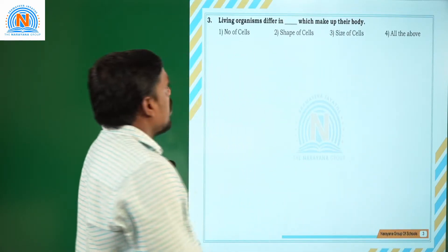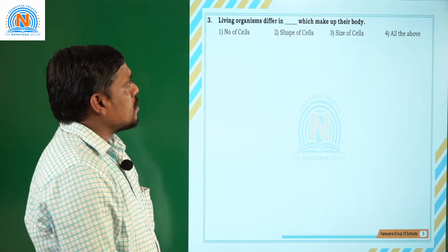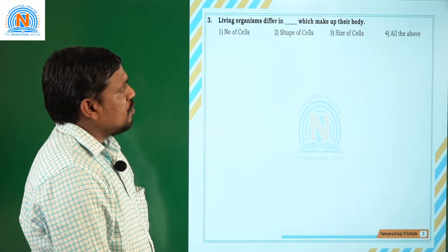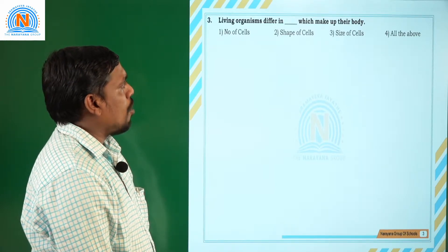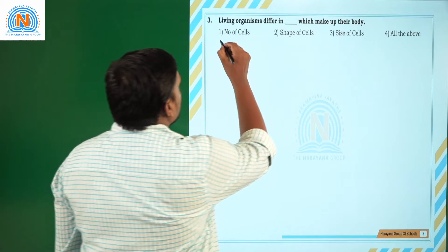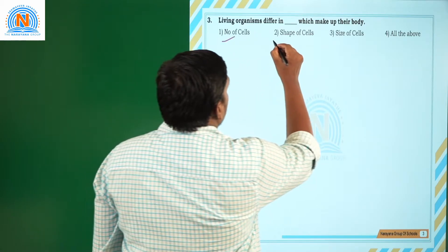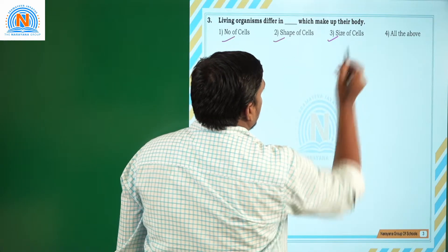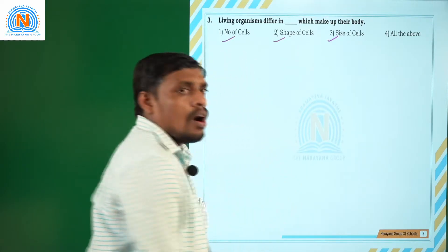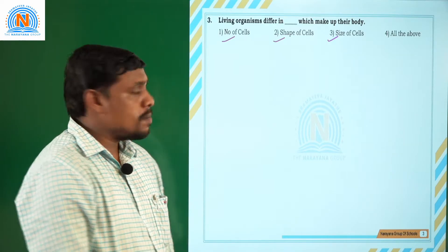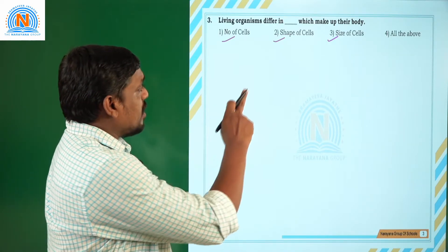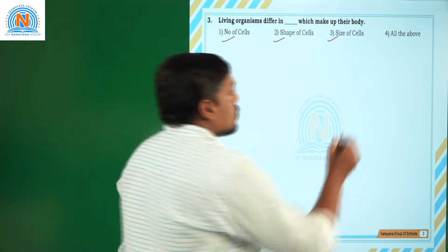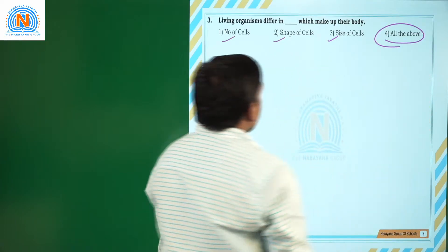Next question: living organisms differ in what makes up their body. They differ in the number of cells, shape of the cells, and size of the cells. Hence, the correct answer is all of the above.